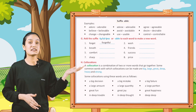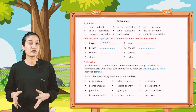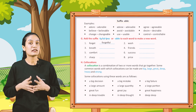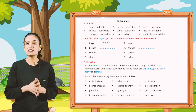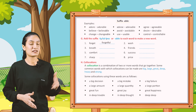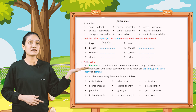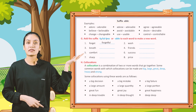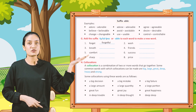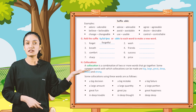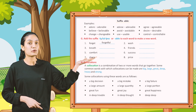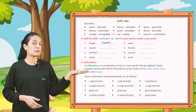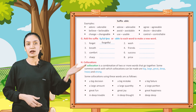Now part G. Add the suffix -LY, -FUL, -LESS, or -ABLE to each word to make a new word. For example: Forget — Forgettable. Wash — Washable. Breathe — Breathable. In this way, fill in the blanks by yourself.